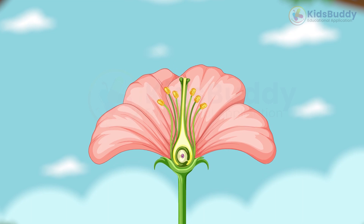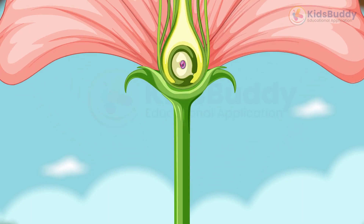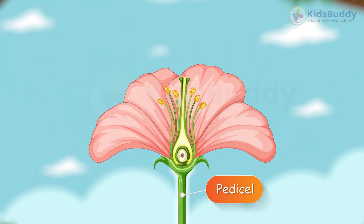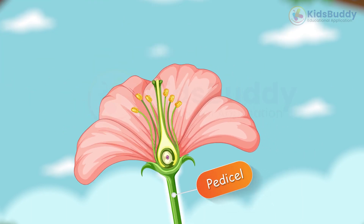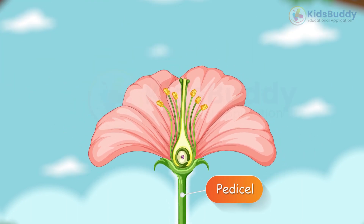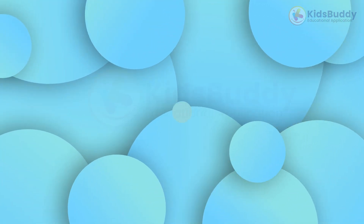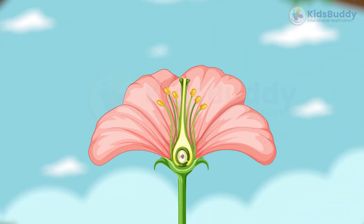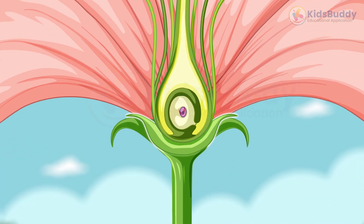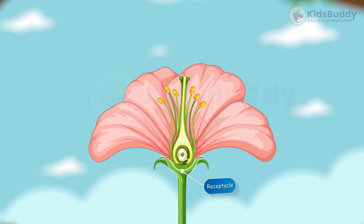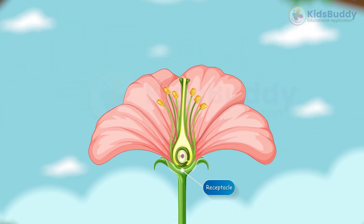Pedicels are known as the stem of the flower. These pedicels hold the individual flower in place. Another part is called the receptacle, which holds the major parts of the flower.